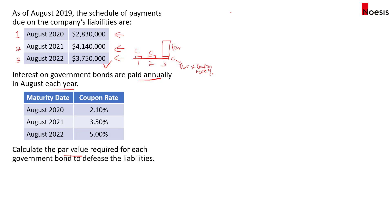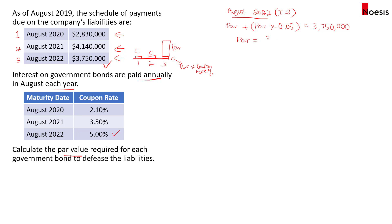Starting from year three — August 2022 — we need the par value plus the par value multiplied by the coupon rate of 5% to equal the cash outflow of $3.75 million. So the par value required for the three-year bond will be $3.75 million divided by 1.05.